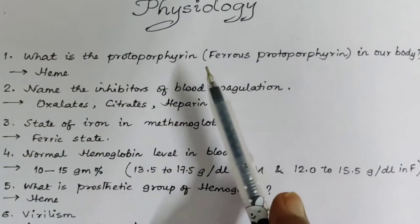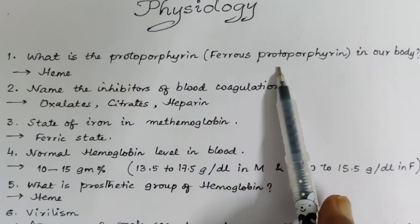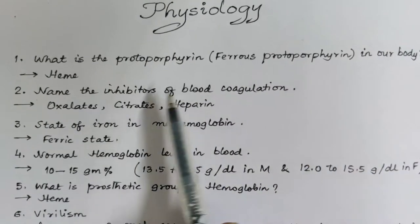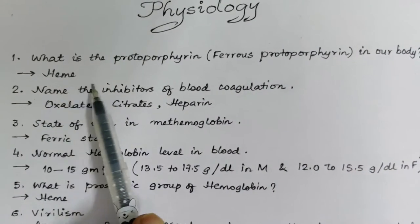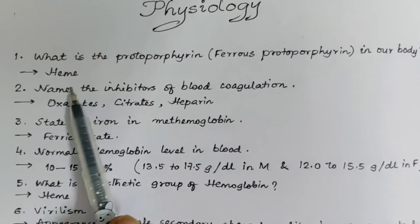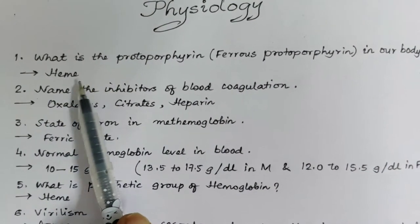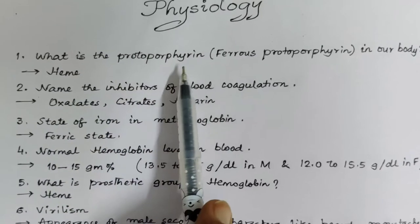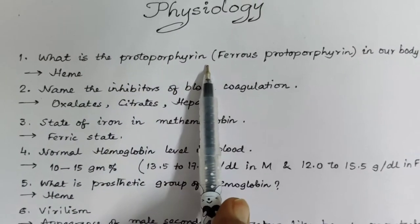Protoporphyrin is also known as ferrous protoporphyrin. It is nothing but heme — the heme of hemoglobin. It is the protoporphyrin found in our body.